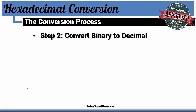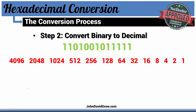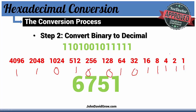Next up, we're going to convert that binary number to decimal. For each binary digit we draw out a binary-to-decimal conversion table. We have 13 binary digits, so we start from the right and work left, doubling each number until we have 13 columns. We plug it in: 1, 1, 1, 1, 1, 0, 1, 0, 0, 1, 0, 1, 1. Then you add up the 1s — 4,096 plus 2,048 and so on. Once you add them all up, you're going to get 6,751.